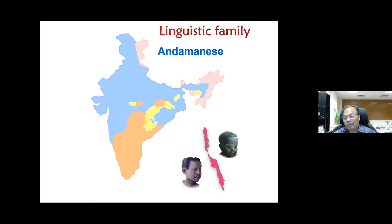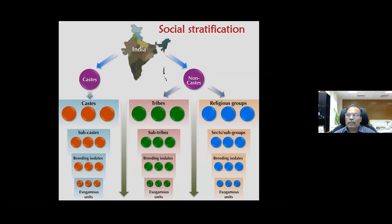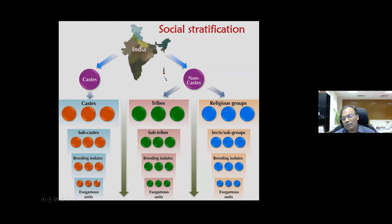Under each linguistic group, we have a large number of social structures — including the caste system and religious groups. Under caste, we have sub-castes, breeding isolates, and exogamous units. Similarly in tribes, you see a similar structure. What is particularly interesting is that every single endogamous unit marries within the group and doesn't marry outside. This has been practiced for the last several thousands of years, which makes every population unique as they acquire a unique set of mutations.